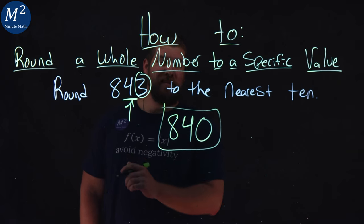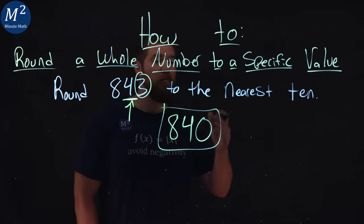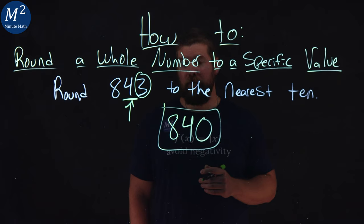And so, it's that simple. 843 rounded to the nearest 10 is 840.